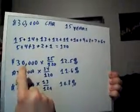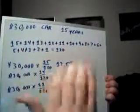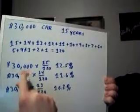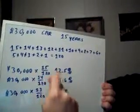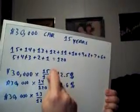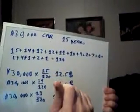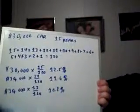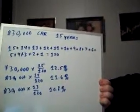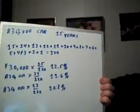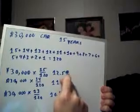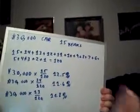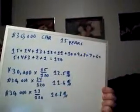Well, you take the $30,000. Let's say this is the first year you're going to depreciate the car. You're going to show the true value of the car at the end of the first year. So you're going to take the $30,000, multiply it by a fraction, which is 15 divided by 120. Well, if you take 15 and divide it by 120, you're going to come up with .125 or 12.5%.